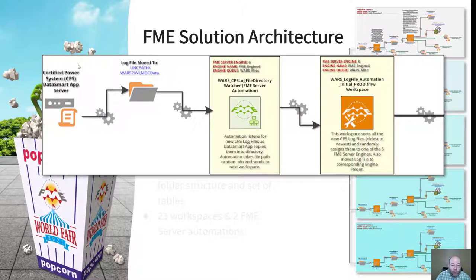When a truck returns back to the yard, the file gets uploaded via the vendor's application called DataSmart. It takes data from the controller, compiles it, puts it into a log file, and dumps it into a directory where FME Server can listen for it. Once new log files are dropped into that folder structure, the first of three workspaces kicks off. In this first workspace, we take all the files dropped in during a one-minute polling interval, sort them from oldest to newest, extract key information such as log file name, truck number, and date, randomly assign them to one of five engines, and physically move the files into those engine-specific folders to queue them for the next piece of the automation.